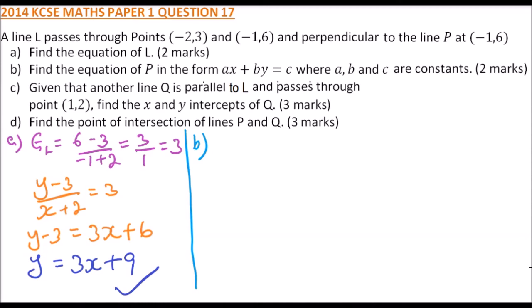...its gradient equals minus one-third, because when you multiply −1/3 by 3 you get −1. So to get the equation of p, we are going to use the point (−1, 6).